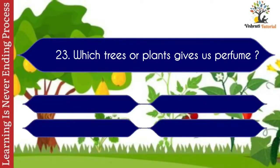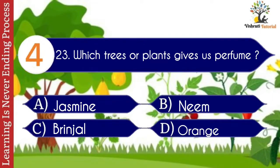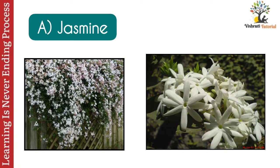Question number twenty-three: which tree or plant gives us perfume? Options: A. Jasmine, B. Neem, C. Brinjal, D. Orange. The correct answer is A. Jasmine. Jasmine is a type of tree or plant that gives us perfume.